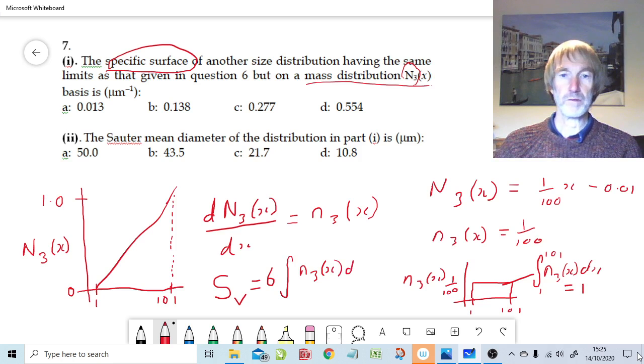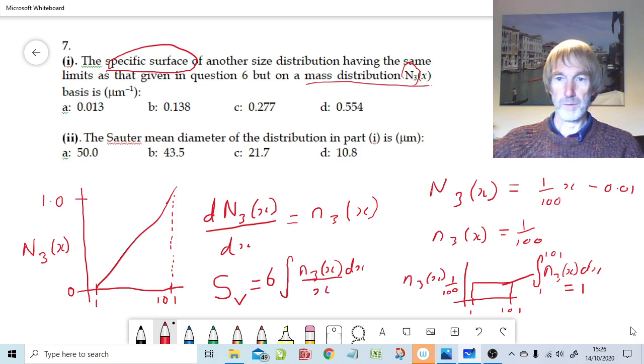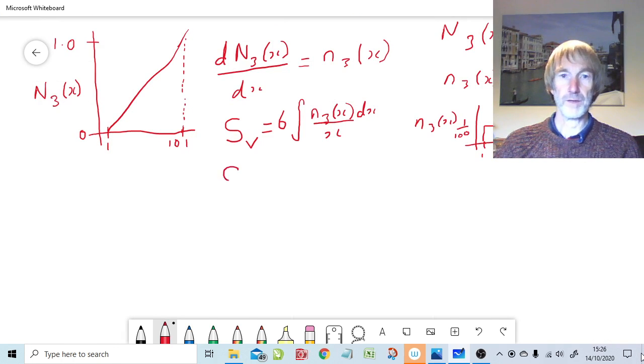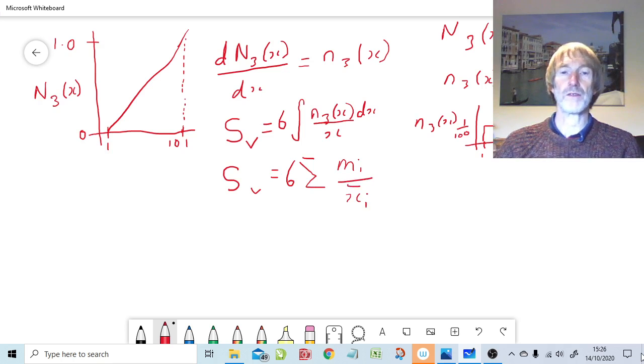Now, we've used a very similar equation when we were looking at discrete functions rather than continuous functions. What do I mean by that? That's a very similar equation to what we were looking at when we had the tabular data. That's what I mean by the discrete function, because we had a summation that looked something like this. m of i is mass fraction, x of i, x bar of i is midpoint in each one of the grades. These are our two equivalent equations for specific surface area per unit volume. This is the one we want for question seven. It's a continuous function. This is the one we were using in the earlier questions when we had the tabular data.